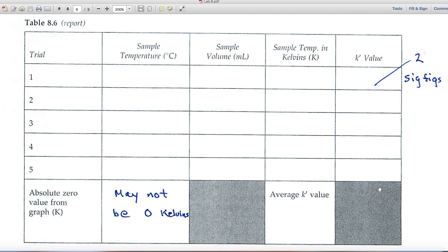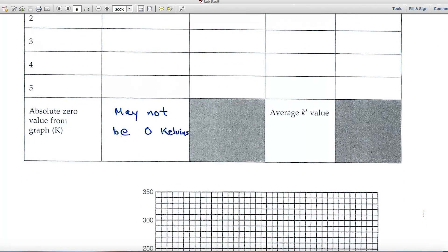You could use scientific notation over here if you'd like, or use the regular form, but two significant figures. And down here is a very important part of your data. The absolute zero value from the graph that we'll look at in just a second. You know that absolute zero is zero K, but the value that you calculate may not be zero K, zero Kelvins.